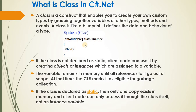This is the simple syntax to create a class: modifier, class keyword, and class name, followed by the class body. If the class is not declared as static, code can use it by creating an object or instance which is assigned to a variable. The variable remains in memory until all references go out of scope.